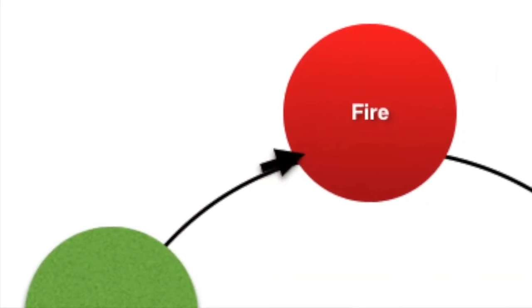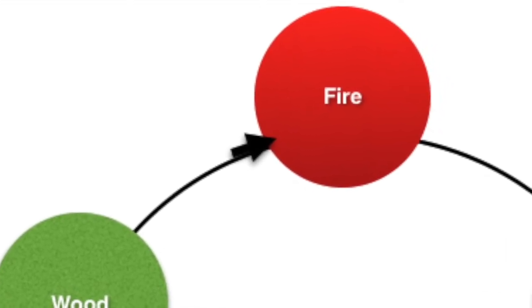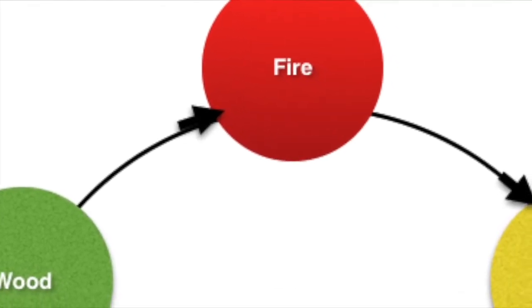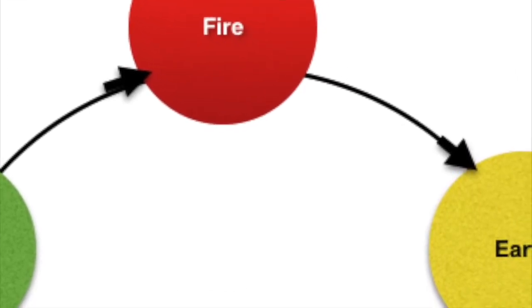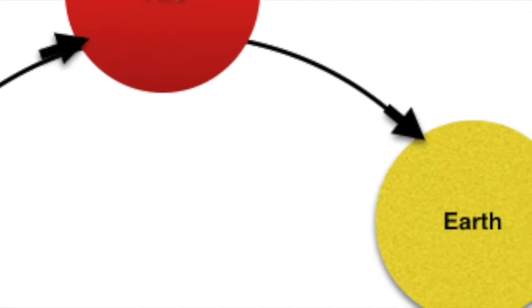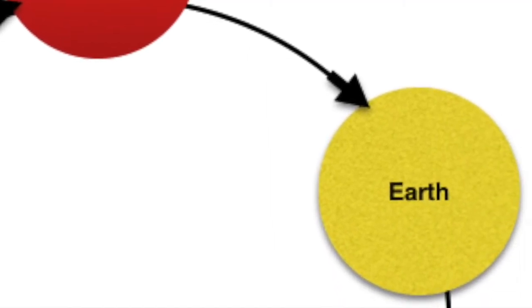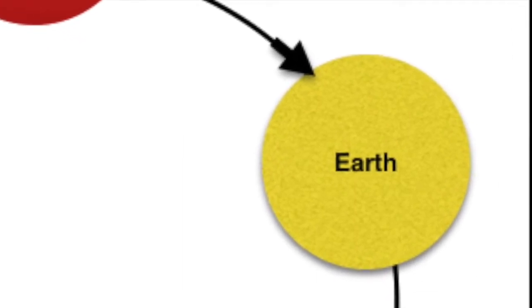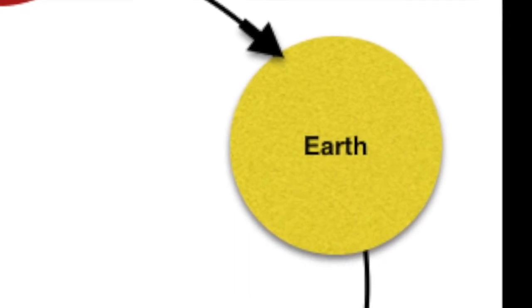During middle age, we are more grounded, and earth rules this time of life. The season is late summer or harvest time or Indian summer, and earth's emotion is worry. This is the time of life when people are settling down, building homes, and having children. Earth's direction is central, its color is yellow like that of the harvest grains, and its food taste is sweet.